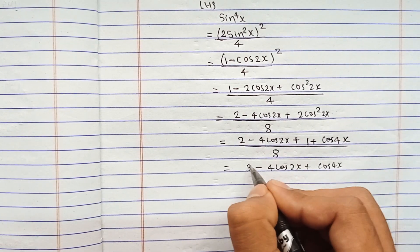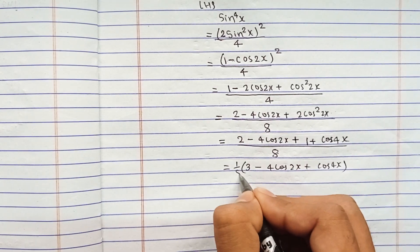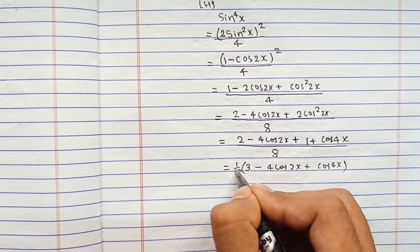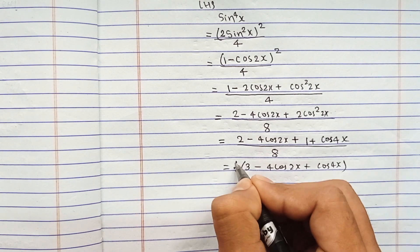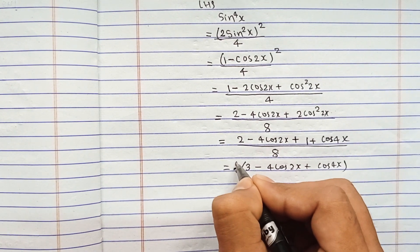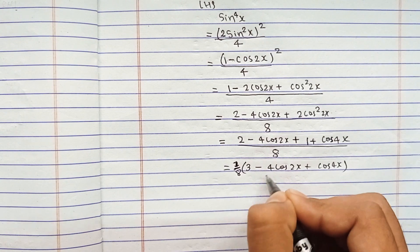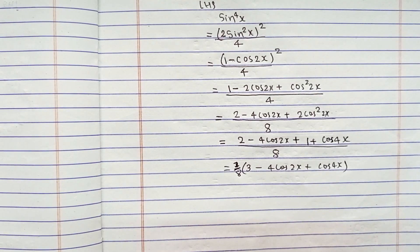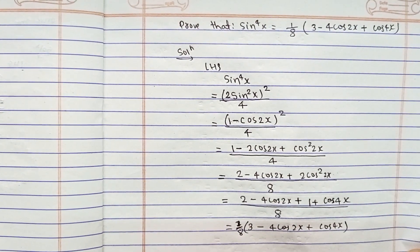This implies: 2 plus 1 is 3, minus 4cos 2x plus cos 4x, upon 8. Taking the 1/8 common, you can write it as 1/8 times (3 minus 4cos 2x plus cos 4x). And this is all we need to prove.